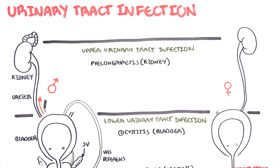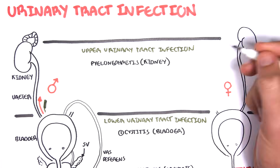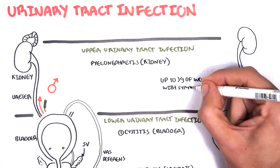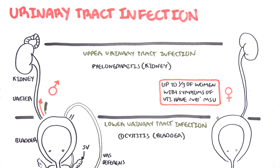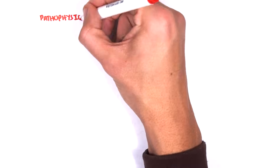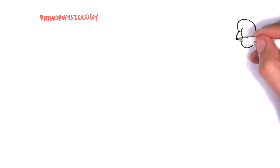Interestingly, urinary tract infections are more common in women, and up to one-third of women with symptoms of a urinary tract infection actually have negative midstream urine samples revealing no form of infection. That was a side note, but how does a UTI occur? Let's look at the pathophysiology.